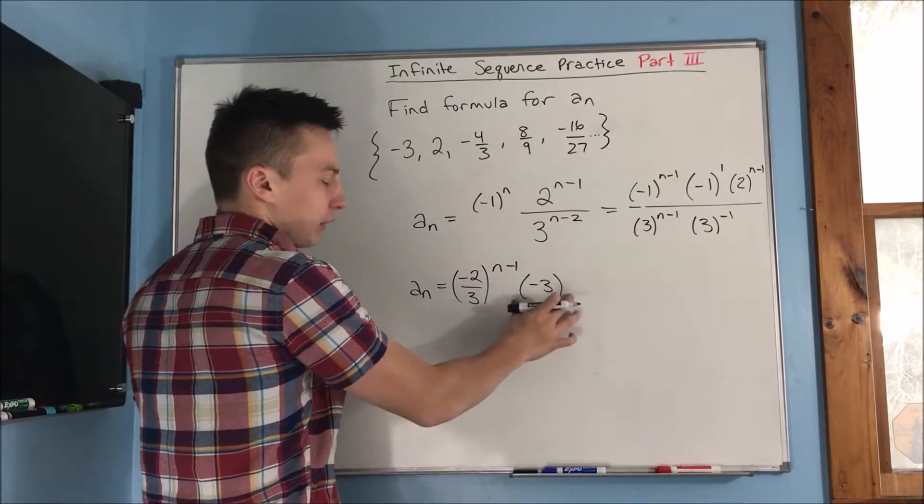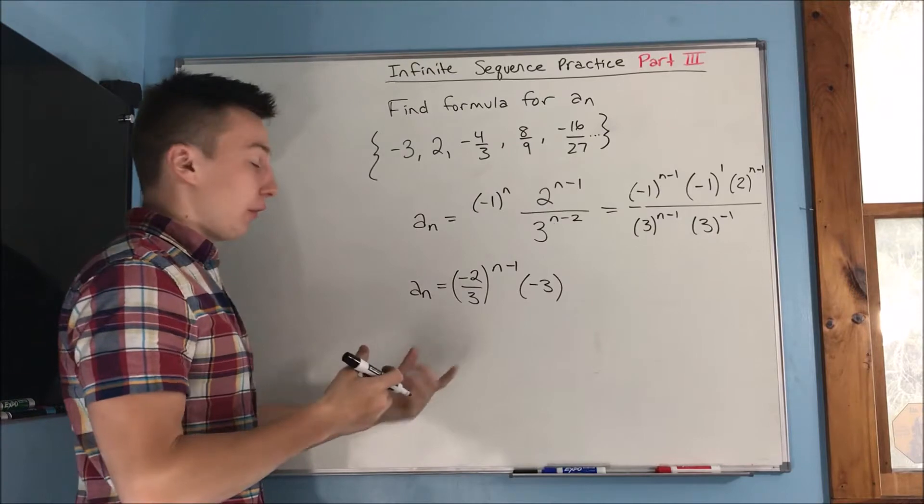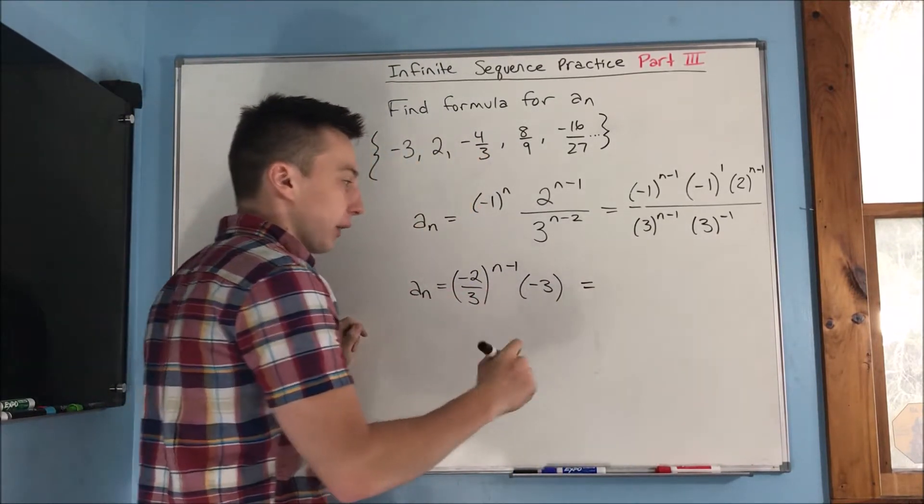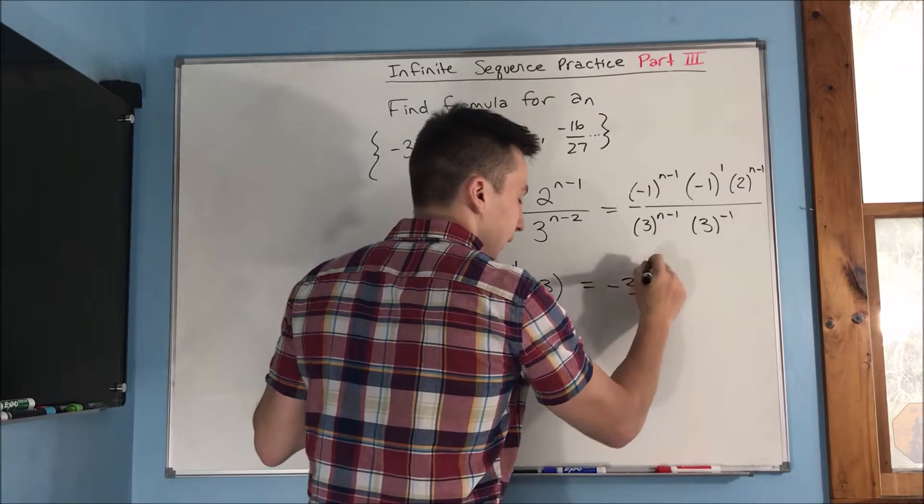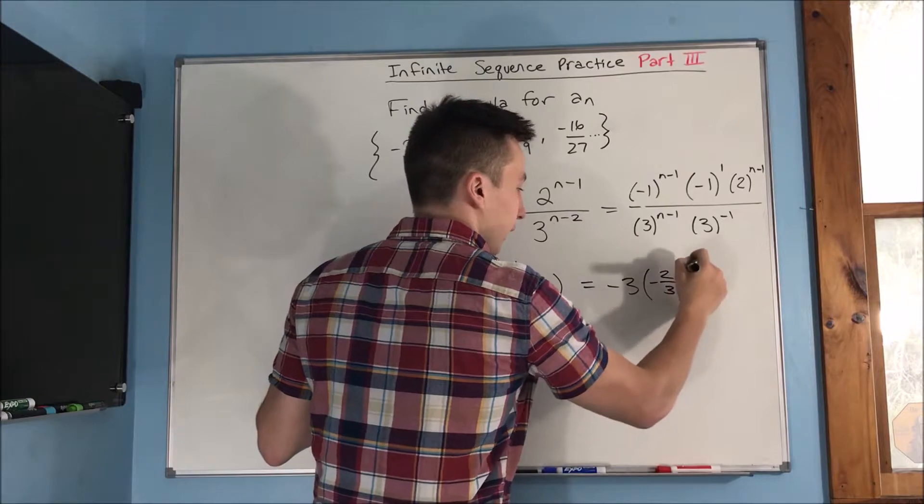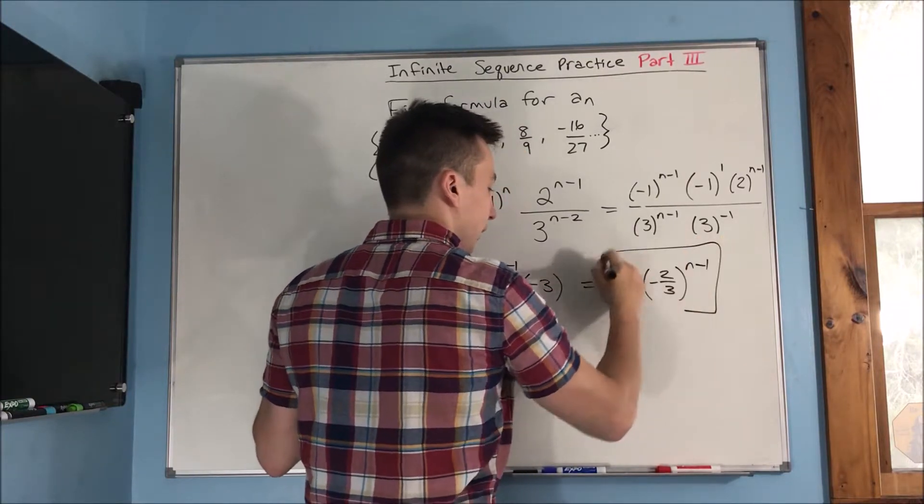Of course, when we have something like this, we probably want to pull it out front of the negative two thirds to the n minus one. So we can just rewrite this as negative three times negative two over three to the n minus one. That looks a little bit nicer.